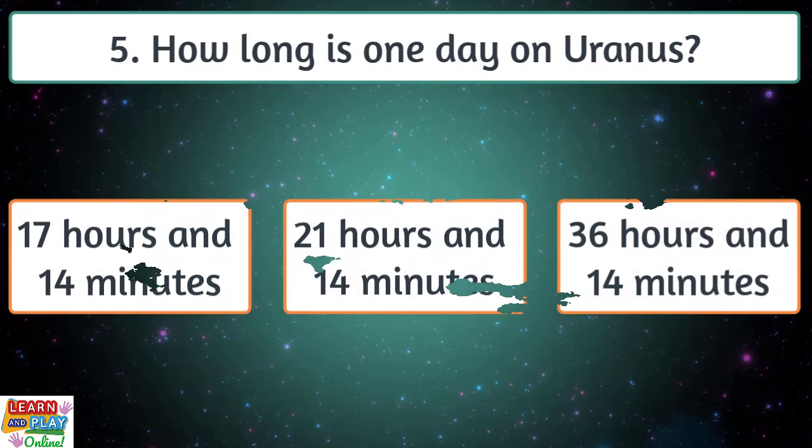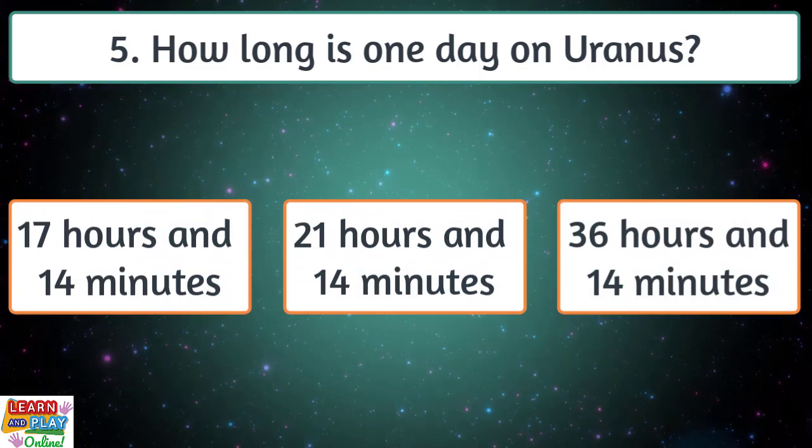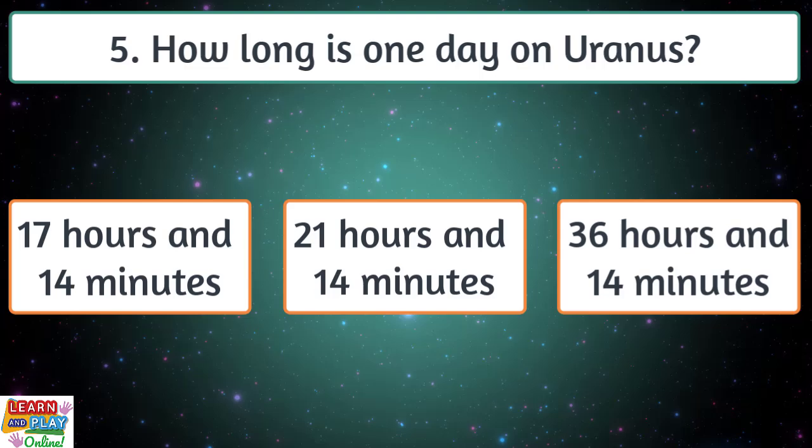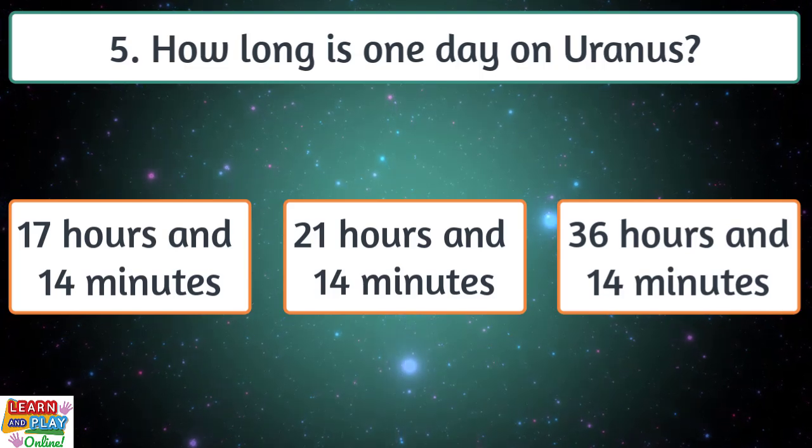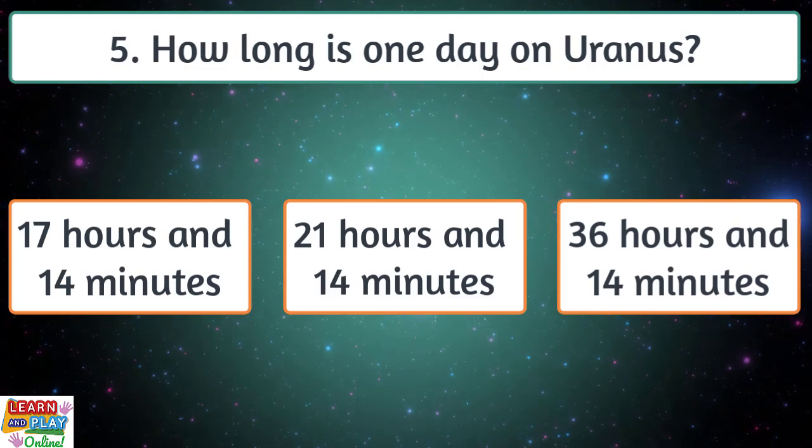Question 5. How long is one day on Uranus? 17 hours and 14 minutes, or 21 hours and 14 minutes, or 36 hours and 14 minutes?